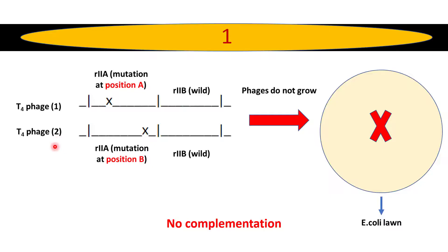Both types of phages contain a mutation in the rIIa locus. The difference is that the position of the mutation is different — one mutation is at position a, and another mutation is at position b.